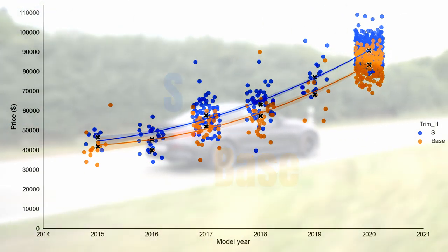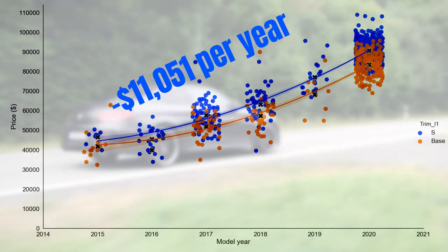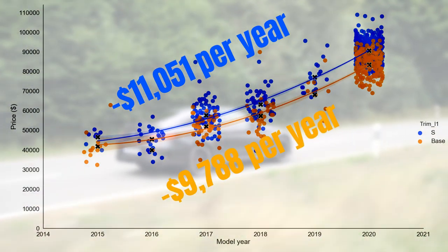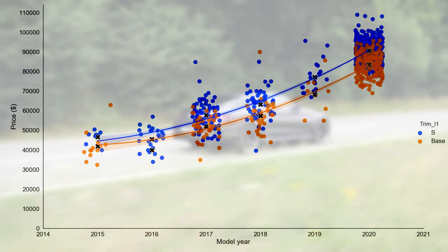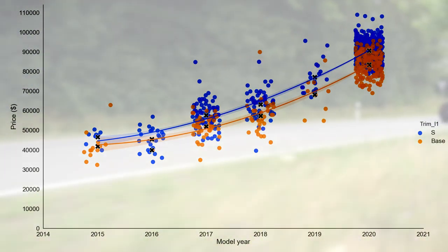You can see now that the S depreciates at an average of $11,051 and that the normal version depreciates at an average rate of $9,788 per year. So, as you could probably expect, the S depreciates with a higher absolute number than the normal version.